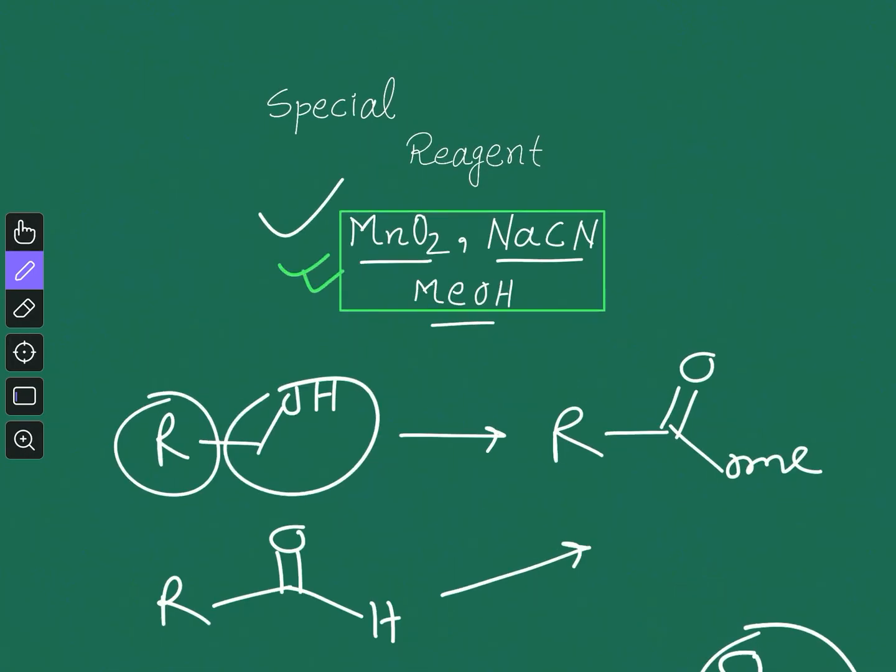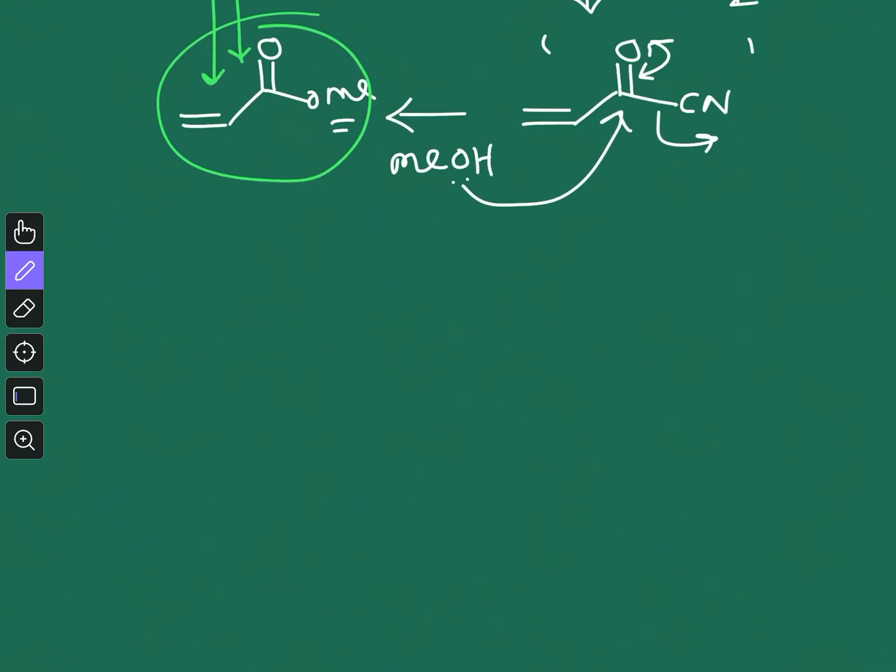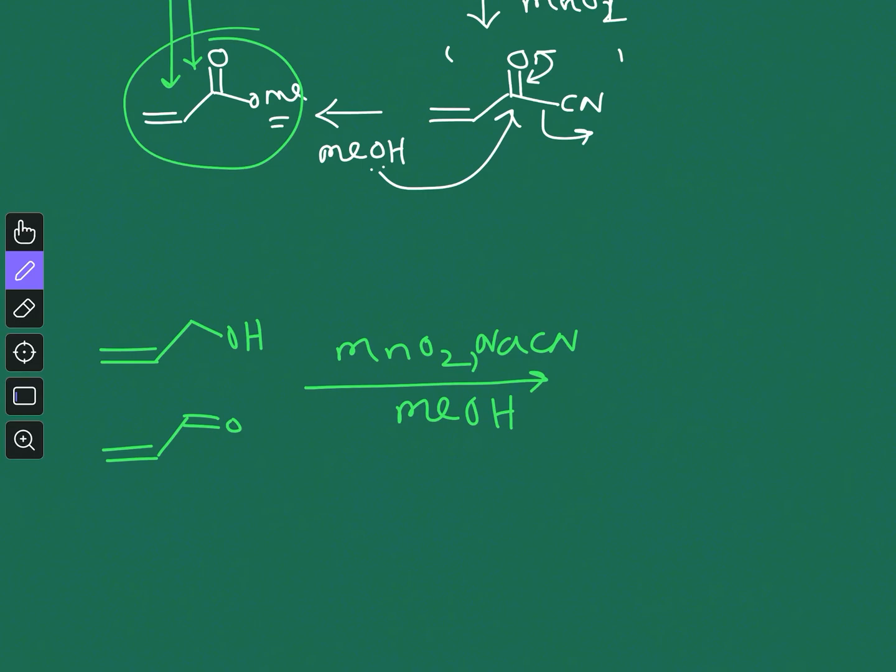This reagent combination is very interesting: MnO2, sodium cyanide, and methanol. Now in this case all these reagents are used in one step. So the reaction should be shown like this. Let's say you have this allylic alcohol or you have this aldehyde, so it is shown like MnO2 and sodium cyanide and methanol is also used as a solvent and as a reagent. This is how the reaction is drawn and you will have this allylic ester.